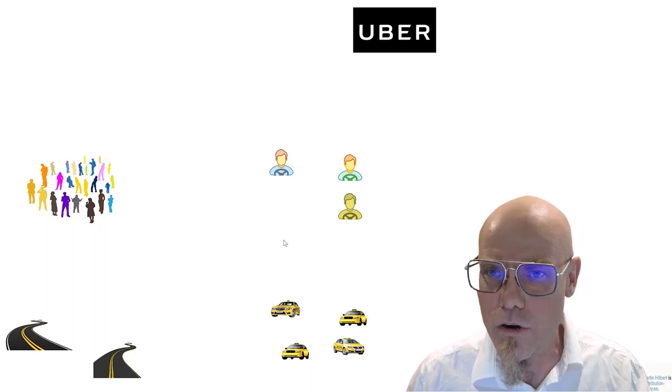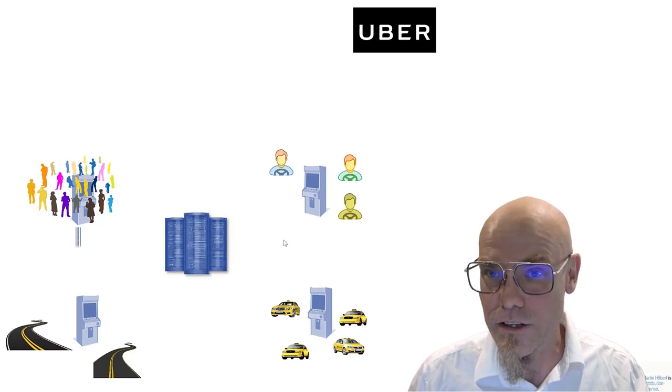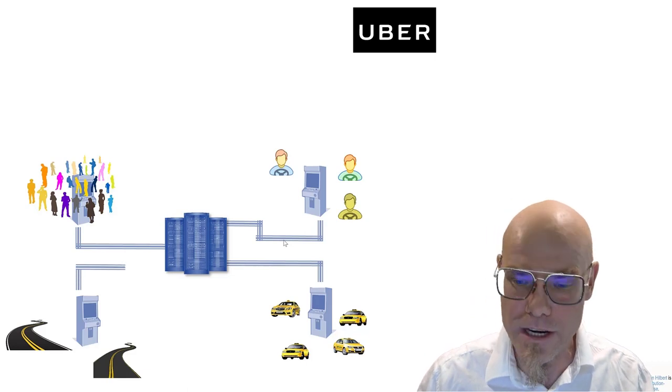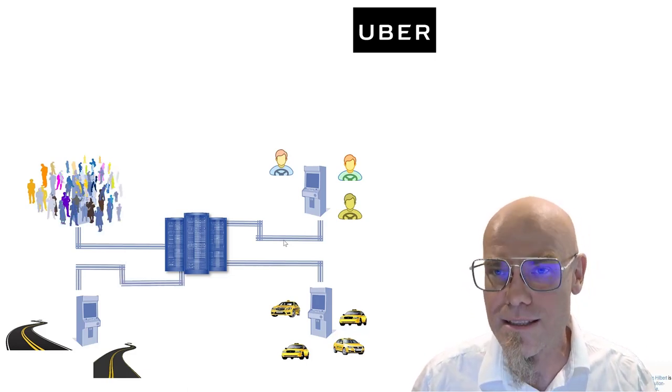But Uber doesn't necessarily own any of that. What it owns is information. It collects information about them and creates a communication network between them, and then it creates what we will get to know as a digital twin.